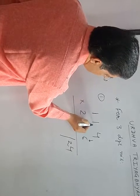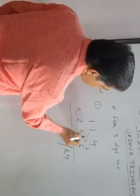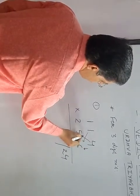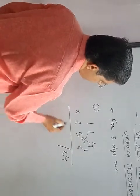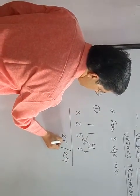Then take cross multiplication and adding. 1 into 6 is 6, 5 into 4 is 20. This will become 26.